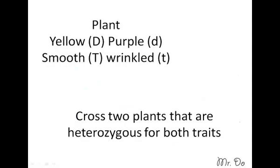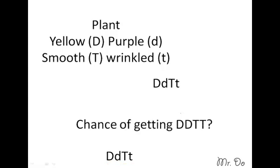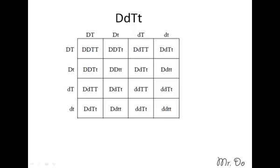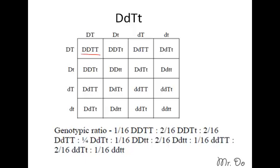Let's do it the short way. For example, you're given a cross of two plants that are heterozygous for both traits, so we write it out. We cross them together and they ask: what is the chance of finding totally dominant for both traits? If you do the full dihybrid cross, totally dominant for both traits appears only once, so the chances are 1 out of 16.